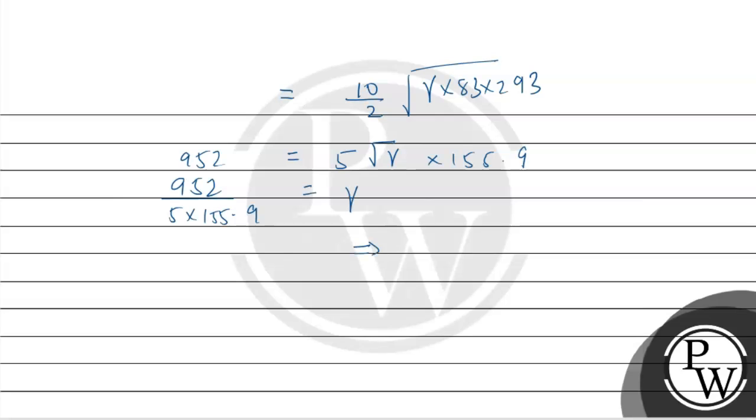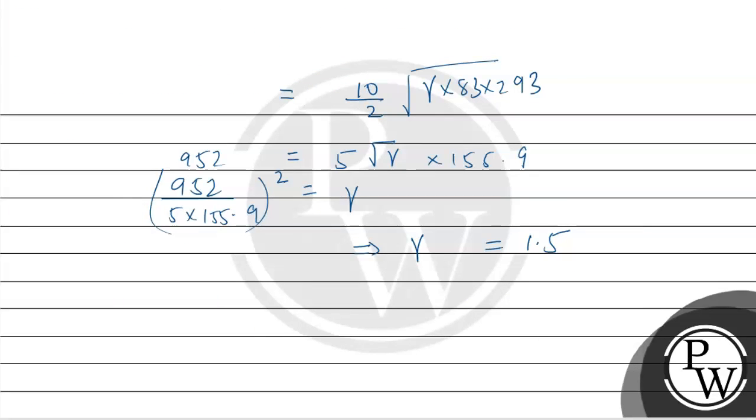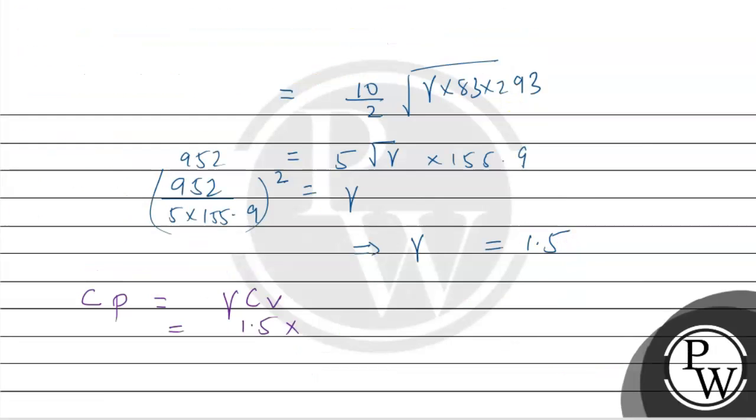So gamma, which is equal to 1.5. And Cp equals 1.5 into Cv, which is given constant volume 5 Joules per Kelvin. So Cp is equal to 7.5 Joules per Kelvin per mole.